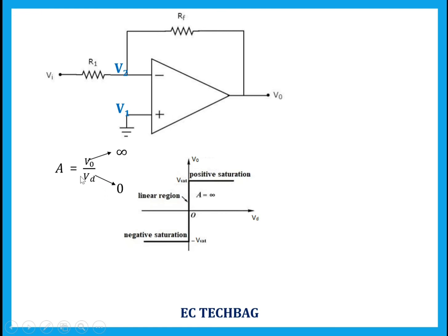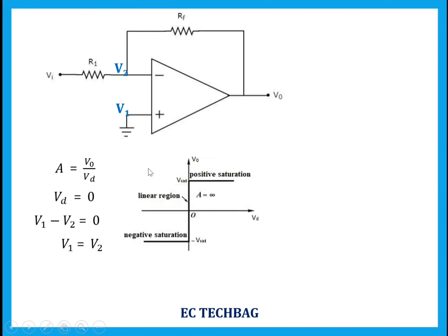So we go for the second option: VD is equal to zero. VD is the potential difference between these two points — that is, VD equals V1 minus V2. Taking VD equal to zero means V1 minus V2 equals zero, so V1 is approximately equal to V2.